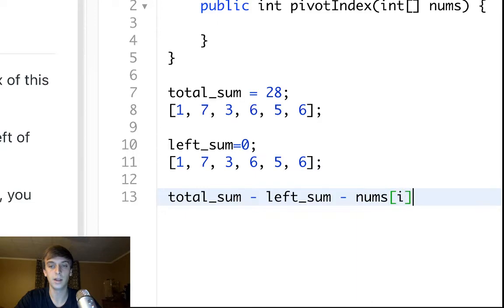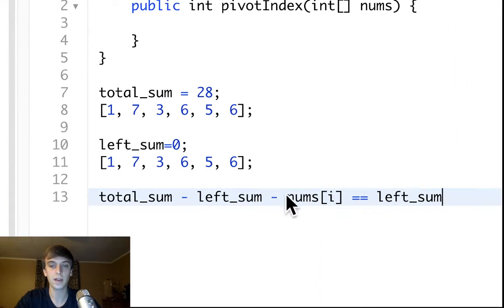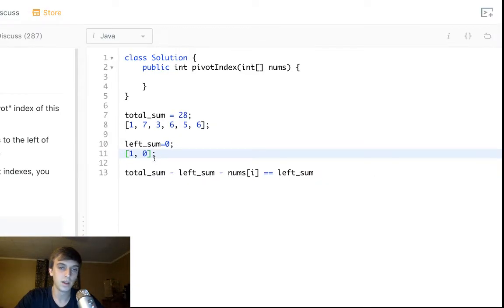This is the main condition right here. Total sum minus left sum minus nums of i equals left sum. If this happens, we found the right index. Because if twenty-eight minus zero, which is the sum right now, minus one, so twenty-seven, if twenty-seven is equal to zero, well then that means that all of the numbers to the right are equal to the numbers to the left. But that's not true. That would mean there is nothing here.